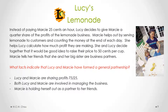The first fact that indicates a partnership is that Lucy and Marcy are sharing the profits, 75% to 25%. The second fact is that both Lucy and Marcy are involved in managing the business, which also indicates that they are in a general partnership. And the last fact is that Marcy is holding herself out as a partner to her friends — when she tells her friends that she and her big sister are business partners, that's what we mean by holding yourself out as a partner.